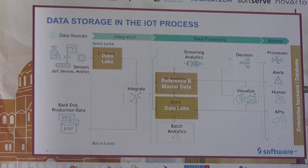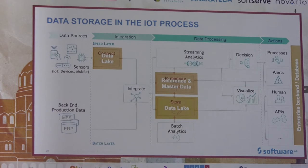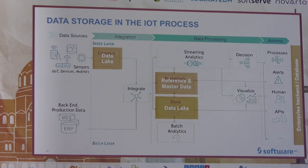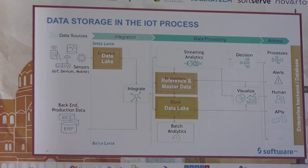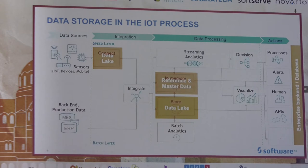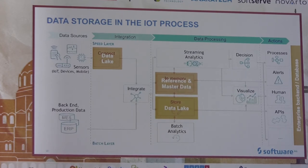For storage, there are several areas. Enterprise systems and databases are typically outside the scope of your IoT system — you just interface with them. Within your IoT application, you typically have a data lake, which is essentially throwing your data into a big bucket without heavy structuring and hoping to find useful information later. You also have in-memory caches for storing reference and master data.